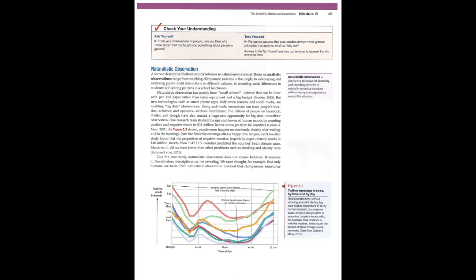Page 45, naturalistic observation. A second descriptive method records behavior in natural environments. These naturalistic observations range from watching chimpanzee societies in the jungle to videotaping and analyzing parent-child interactions in different cultures to recording racial differences in students' self-seating patterns in a school lunchroom. Naturalistic observation has mostly been small science, science that can be done with pen and paper rather than fancy equipment and a big budget. But new technologies such as smartphone apps, body-worn sensors, and social media are enabling big data observations. Using such tools, researchers can track people's location, activities, and opinions without interference. The billions of people on Facebook, Twitter, and Google have also created a huge new opportunity for big data naturalistic observation.